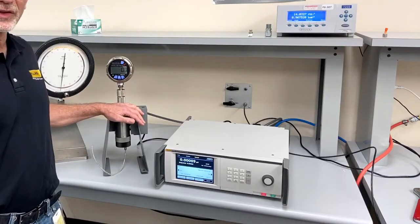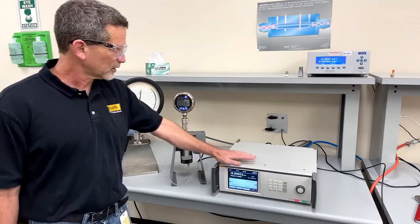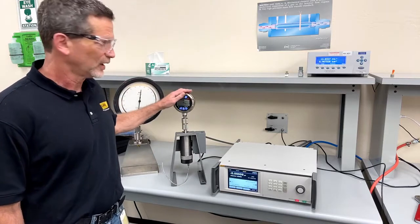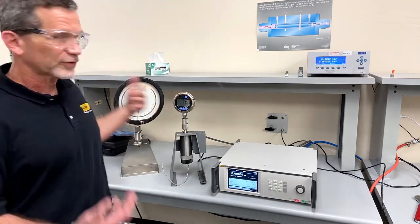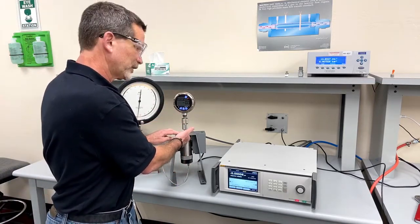What we have here is the accessory called the contamination prevention system. It protects the pressure controller from the contamination that may be in the device under test that comes from its industrial use, whether it's liquid or particulates.